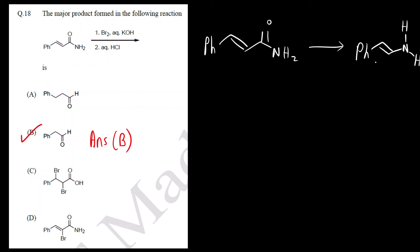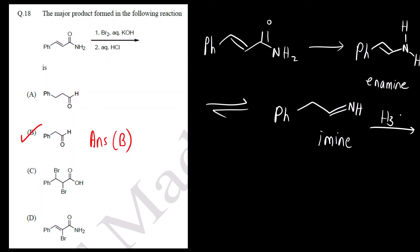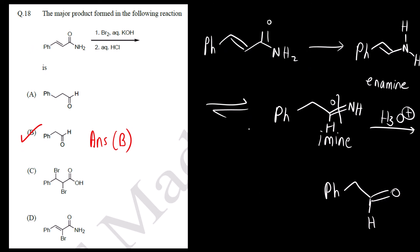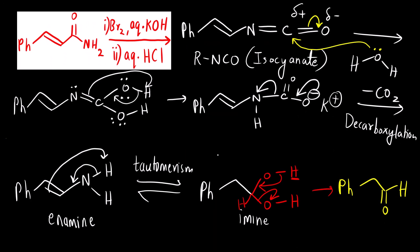You can draw the product directly: do tautomerism on the amine to get the imine, then do simple hydrolysis. You can solve this question in one or two minutes. If you know the name reaction you don't need to know the mechanism, but the mechanism was shown here so you can understand how the rearrangement takes place and how exactly the reaction occurs. This is the final product.